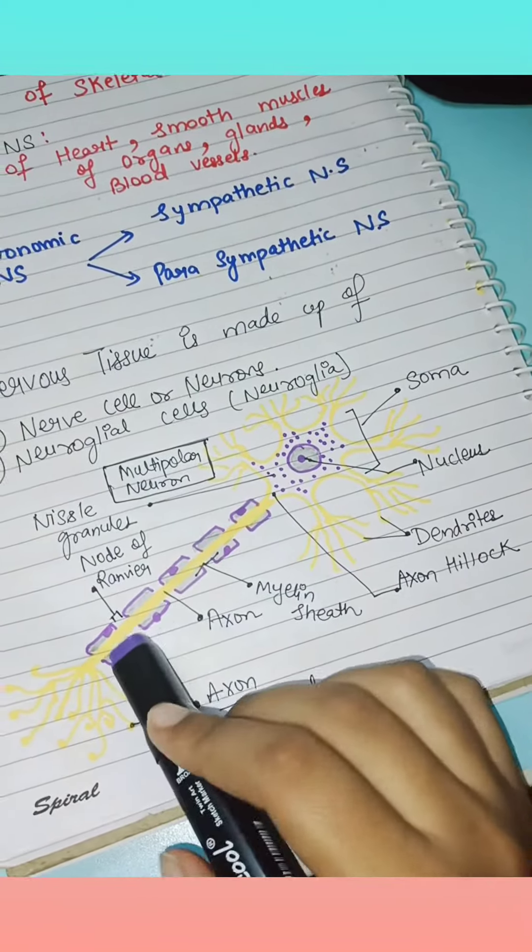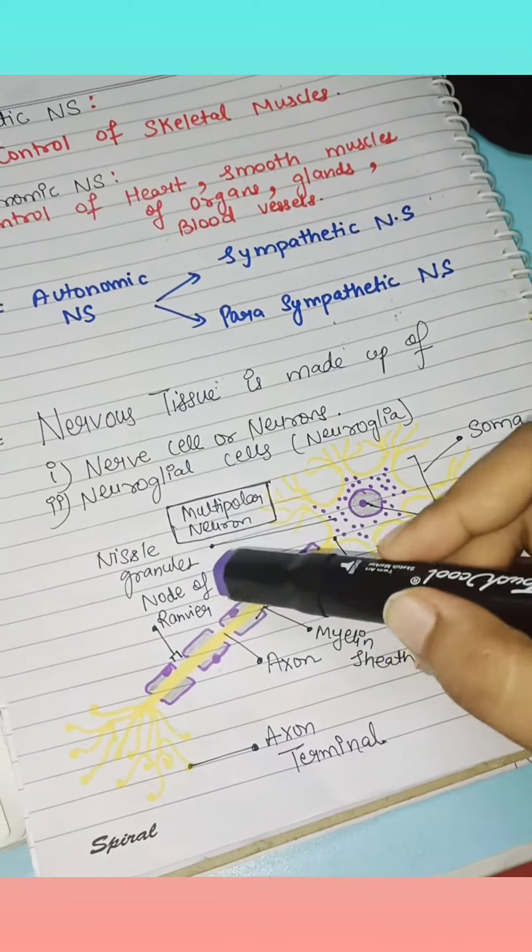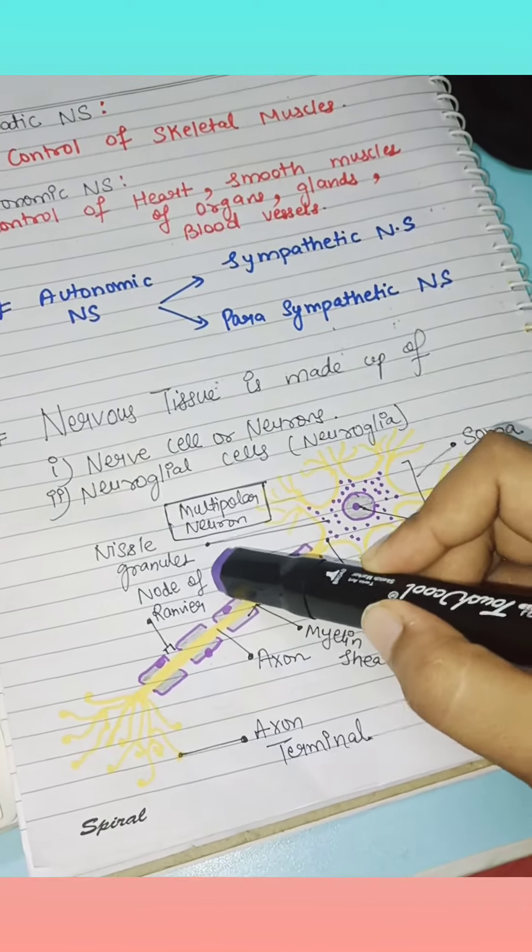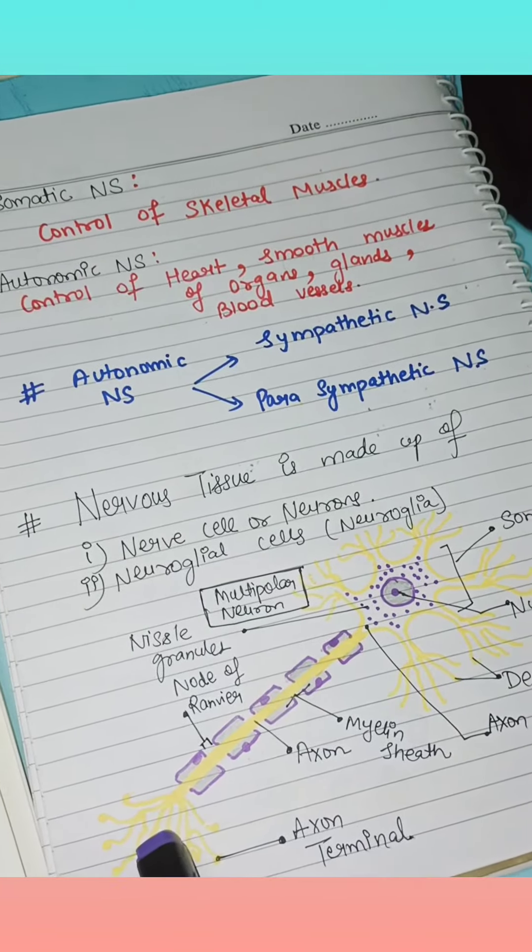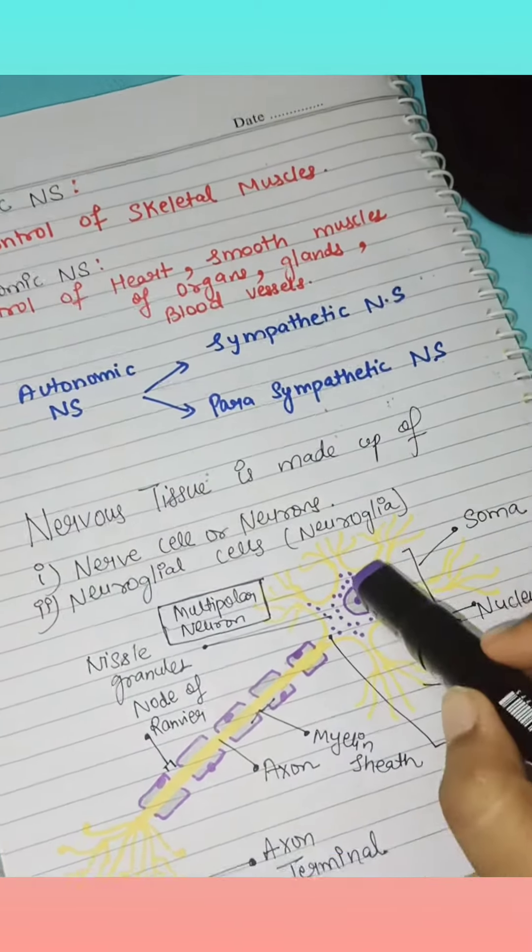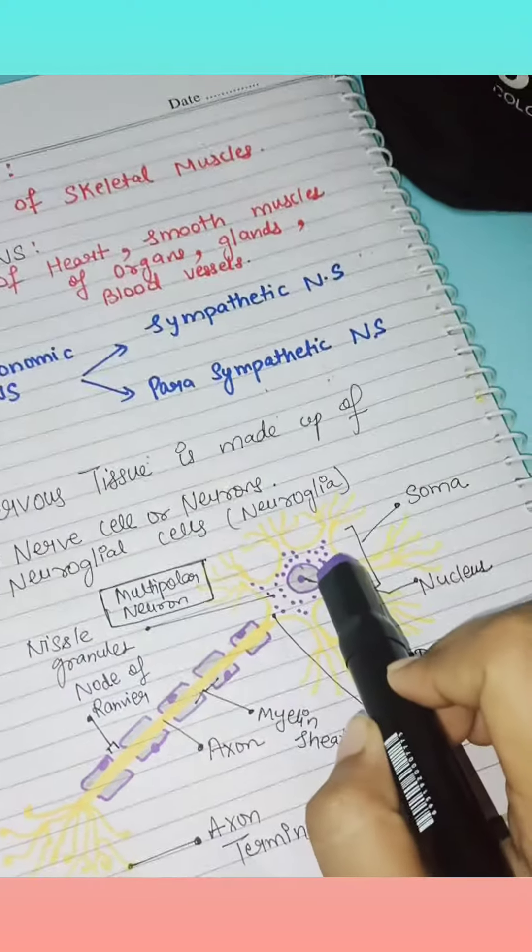This is the myelin sheath. Where the myelin sheath is absent, that place is called nodes of Ranvier. Next is the terminal end, known as axon terminal. We have Nissl granules in the soma.